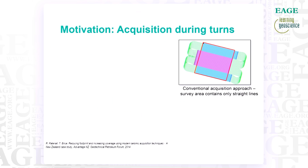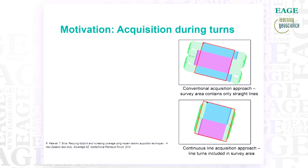A conventional seismic, if we look at the cartoon on the screen, is comprised of a series of straight lines, where after completion of a straight line, the vessel takes a turn outside the survey full fold area and comes back to the next straight line. In continuous acquisition, these turns are incorporated within the survey full fold area, as you can see in the cartoon here.